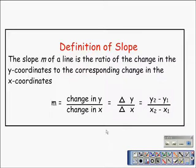Here we can see the definition of slope. The slope M, represented by the letter lowercase m, is the ratio or fraction of the change in the y-coordinates to the corresponding change in the x-coordinates. We're going to concern ourselves with m equals y sub 2 minus y sub 1 over x sub 2 minus x sub 1. That's the slope formula.